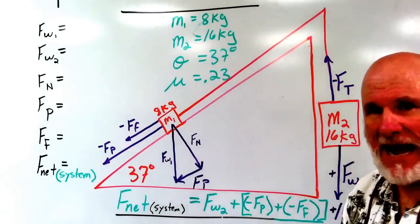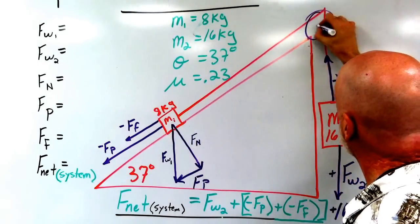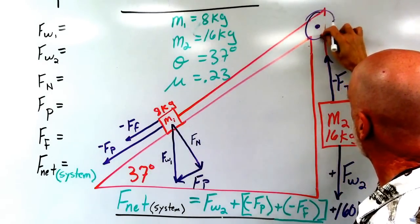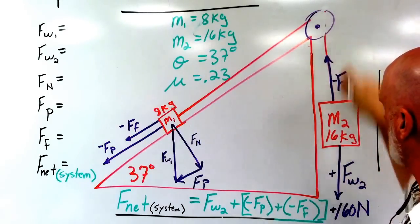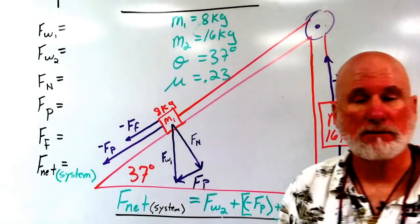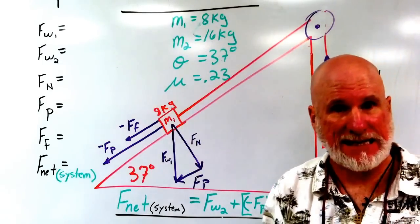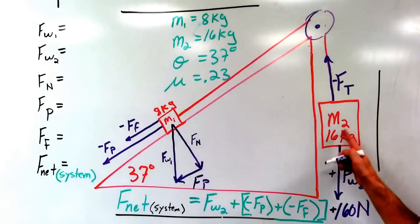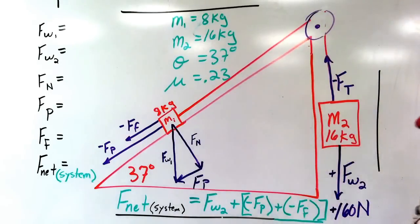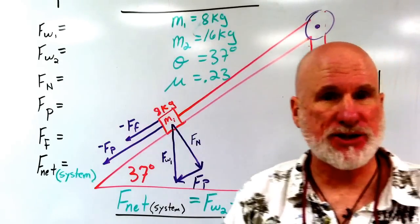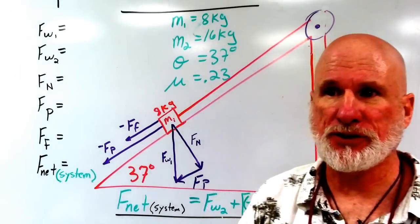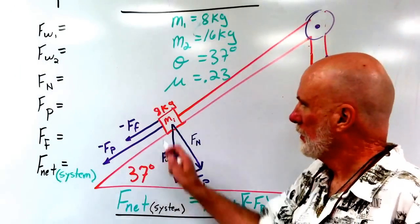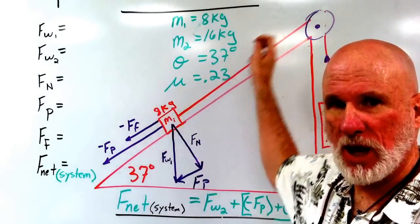It's attached by a pulley to M2. M2 has a mass of 16 kilograms, and that mass is large enough to propel M1 up the slope.